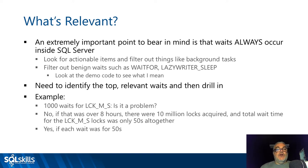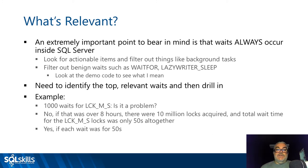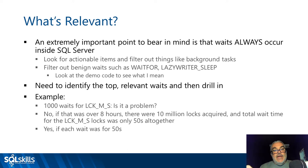For example: if there were 10 million locks acquired altogether with only 50 seconds total wait time, each wait is a tiny fraction of a second — probably not the first thing I'd jump at. But if every one of those thousand waits was 50 seconds each, that's a red flag I'd want to investigate.